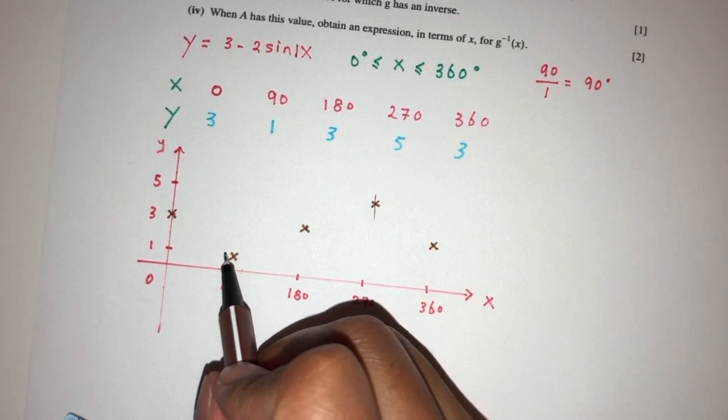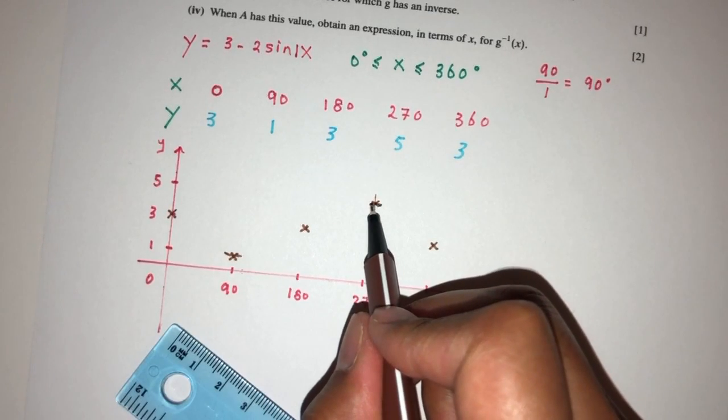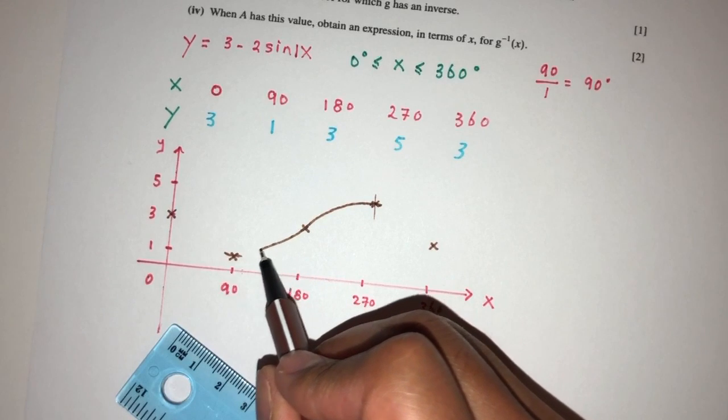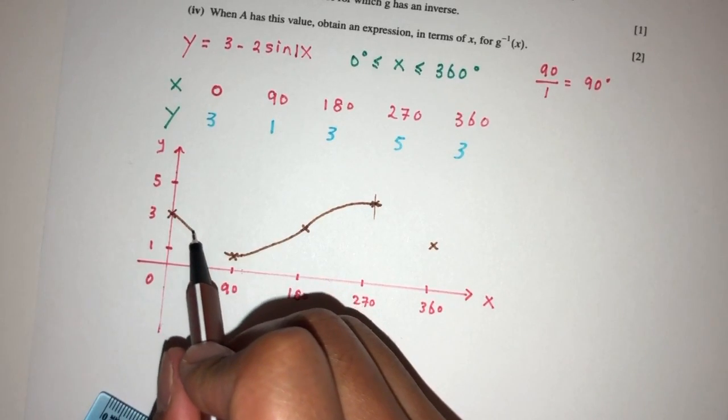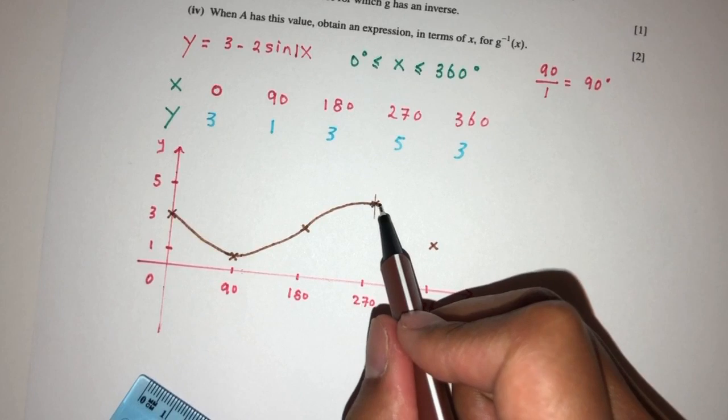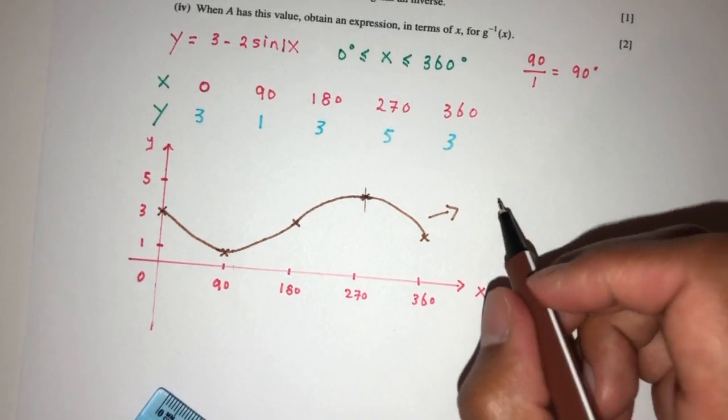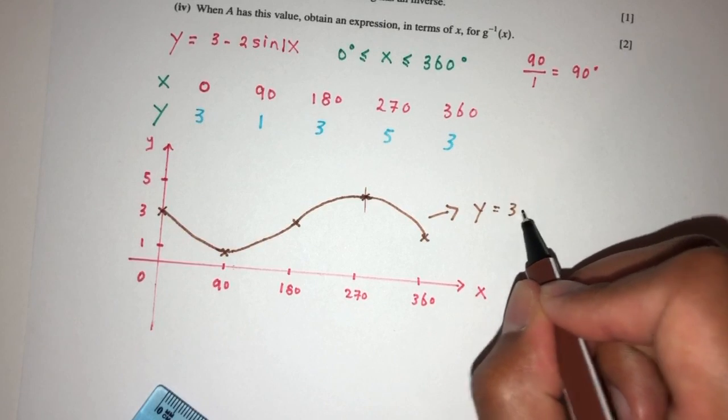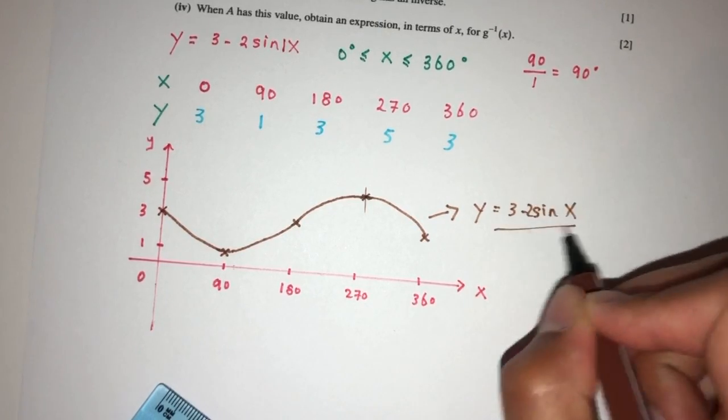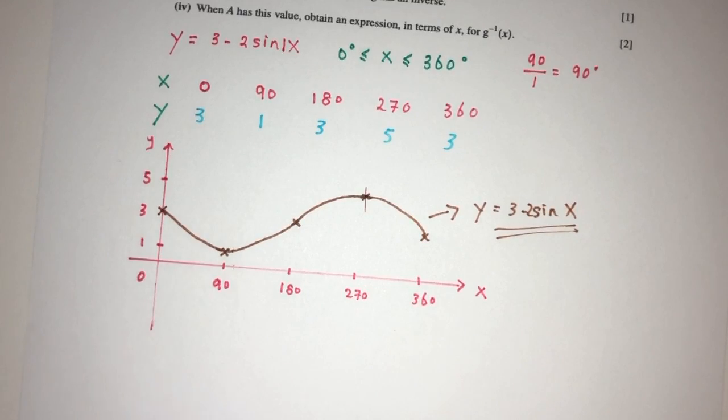Let's try our best to join them by a smooth curve. That should be something like this. Right? Again, it is only a sketch, it doesn't need to be exact. But finally, you have to label your graph as y equal to 3 minus 2 sin x. That will be part 2 of the question.